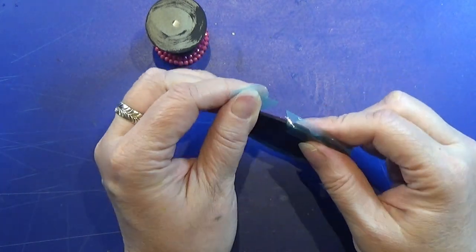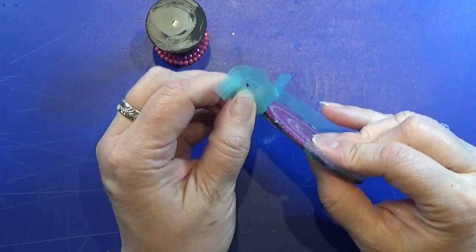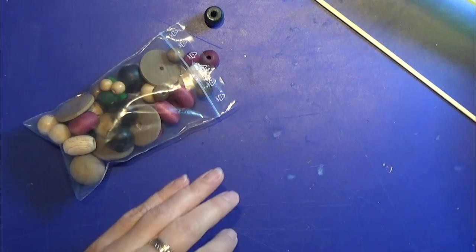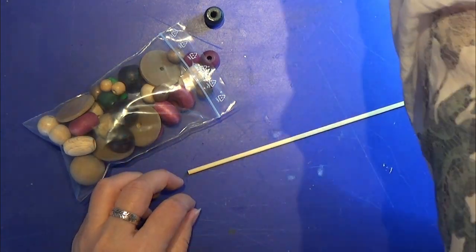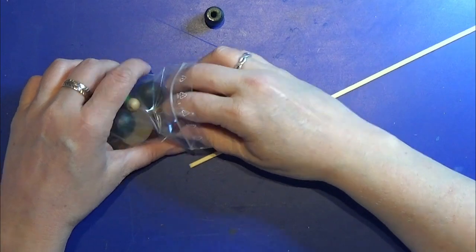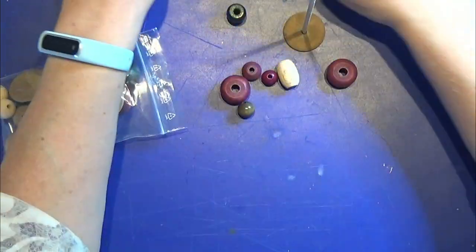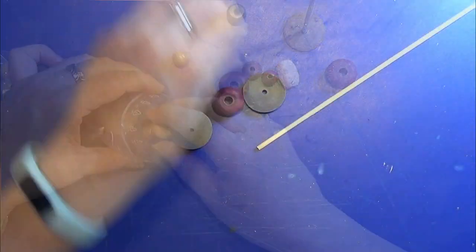After the UV resin has cured I am going to take off the tape around the edge and sand it a bit to make it look a little more nice. Then I am going to do the stand for the table.